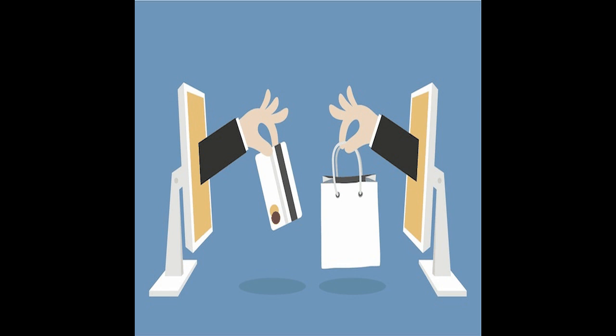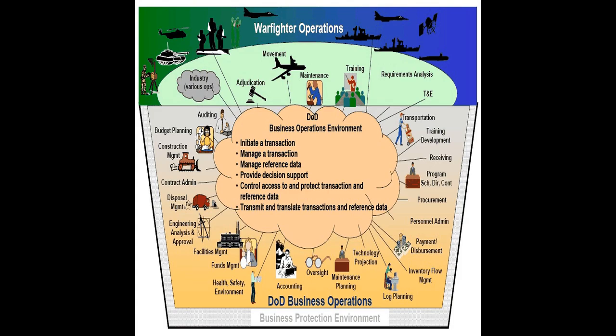In the United States, California's Electronic Commerce Act, enacted by the legislature, and the more recent California Privacy Rights Act enacted through a popular election proposition, control specifically how electronic commerce may be conducted in California. In the U.S. in its entirety, electronic commerce activities are regulated more broadly by the Federal Trade Commission. These activities include the use of commercial e-mails, online advertising, and consumer privacy. The CAN-SPAM Act of 2003 establishes national standards for direct marketing over e-mail.